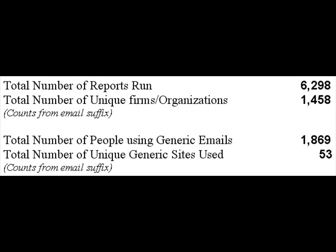The characteristics of the sample population tested matters in any assessment. It does not make much sense to apply rigorous standards to a non-representative sample. In this study, 1,458 different organizations were identified from their email suffixes. In addition, 1,800 people used 53 different generic email sites to run their reports. The sample from which the retests were drawn was both big and diverse, meaning it is unlikely there is a substantial selection bias — these were not all college students or people from a single firm. The size, diversity, and randomness of the population increases the confidence that can be placed in the results.